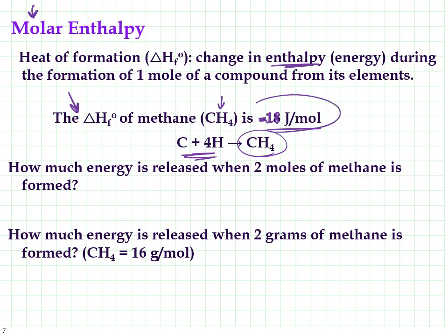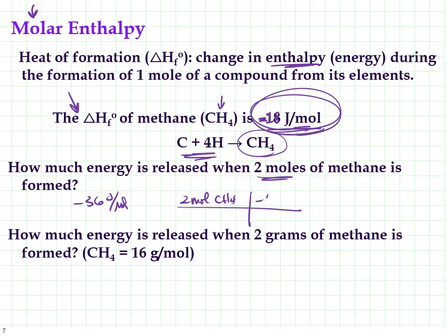If we have negative 18 joules for one mole, how much energy is released when we have two moles of methane? We can just multiply that by two, giving us negative 36 joules. I can use my railroad tracks for this: if I have 2 moles of methane and we know that it's negative 18 joules per one mole, I can cancel out moles top and bottom, and I'm left with two times negative 18 divided by one, which is negative 36 joules per two moles.